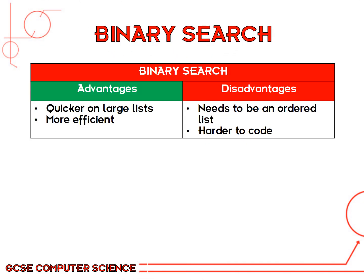The advantage of a binary search is it's much quicker. Sometimes you might be able to find the item you're looking for in one go; sometimes it may take a couple of goes, but it's still much quicker, especially if you've got a large list of information. That also makes it more efficient — it needs to only examine a certain amount of data because you've got rid of half the data every time you run the algorithm. The disadvantage is obviously your list needs to be in order. Another disadvantage is it's much harder to code; the linear search algorithm is very simple, but trying to code the binary search is a lot more difficult.